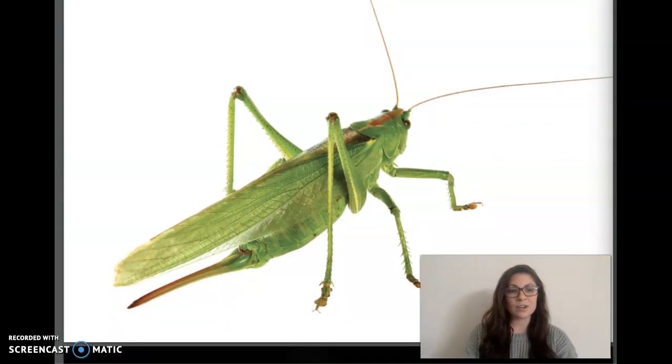Grasshoppers, locusts, and crickets all make sounds by rubbing body parts together, sometimes two wings and sometimes a leg and a wing. To make sounds, I lift my wings and rub the front wings together.